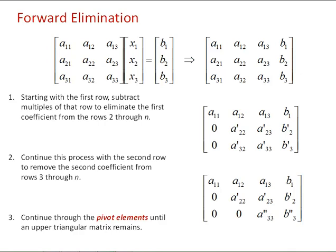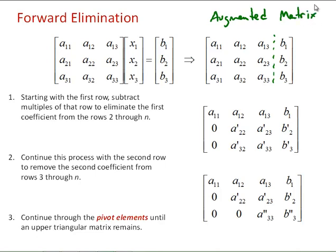First we'll look at the forward elimination step. We start by writing our linear system in matrix form, and then writing it as an augmented matrix, where we take the b vector and add it as an additional column to our coefficient matrix. Then, starting with the first row, we're going to subtract multiples of that row to eliminate the first coefficient from the rest of the rows. The element on the diagonal that we're working under is called the pivot.